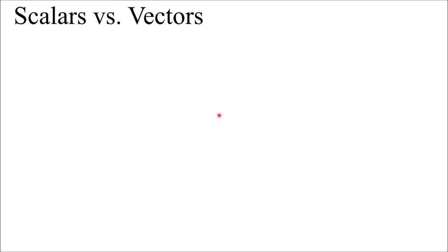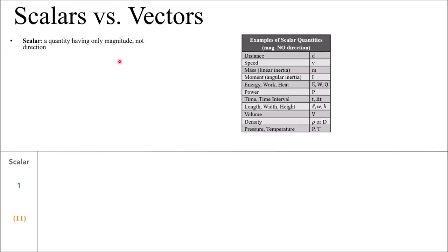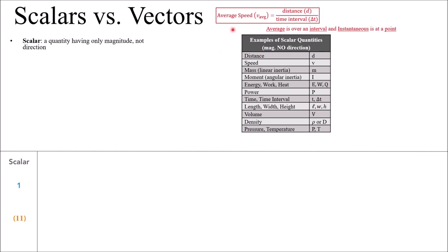A scalar quantity does not have direction — it only has magnitude. Examples you'd recognize include temperature, distance, energy, and time. These are things that you don't usually associate with having a direction. One formula using scalars is average speed. If you're traveling on the highway at 50 miles per hour, 50 miles is a distance and per hour is a time, so speed is distance over time.